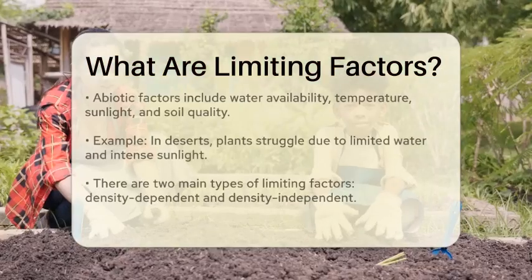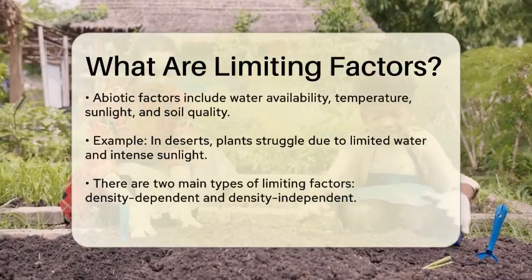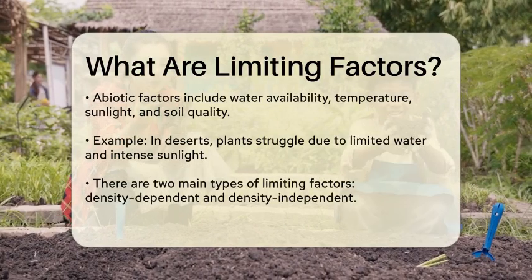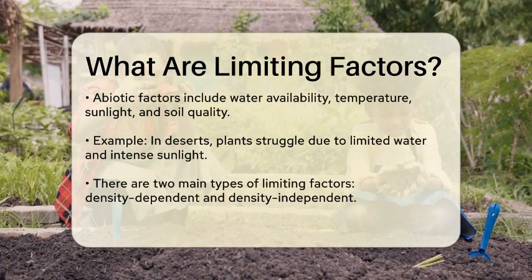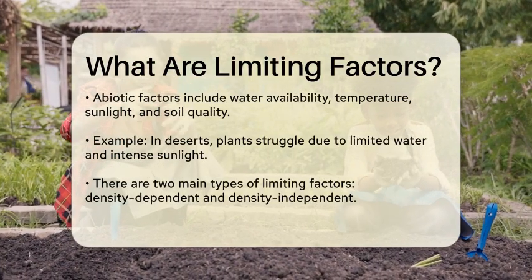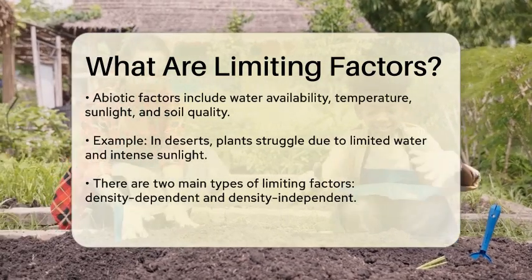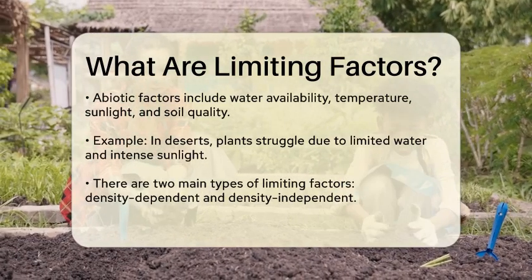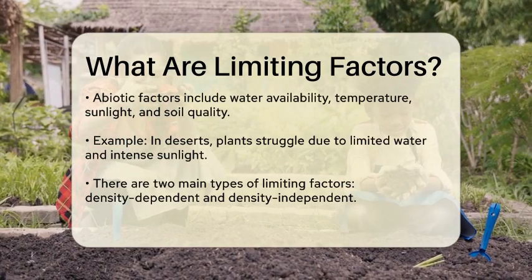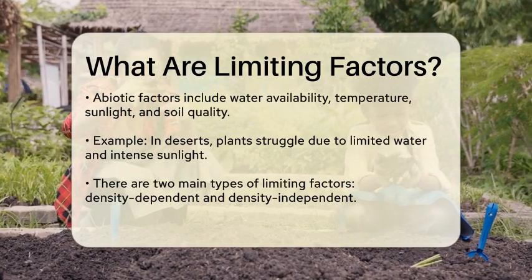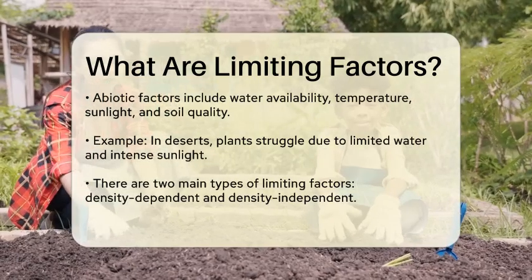Biotic limiting factors include things like predators, prey, competitors, and parasites. For example, in a forest, the population of deer may be limited by the presence of wolves that hunt them. Additionally, deer may face competition for food from other herbivores, which can also limit their numbers.